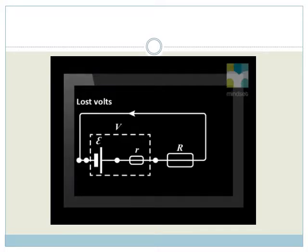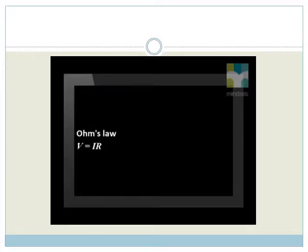The small drop or difference in the EMF is called V lost or lost volts. This means that to apply Ohm's law, V equals I times R to circuits is more complex than the simple substitution of the correct values for V,